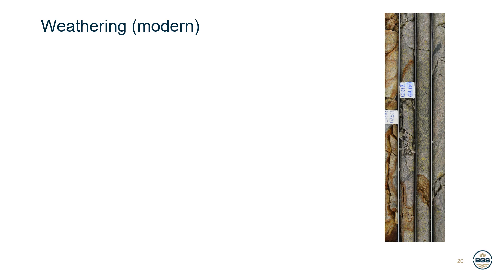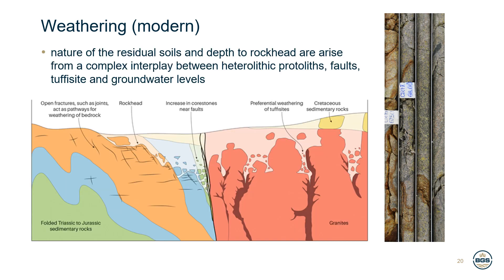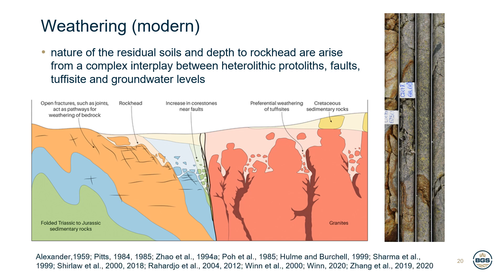The landmass of Singapore has been in a tropical latitude since the Jurassic, resulting in a prolonged history of tropical weathering that includes both recent weathering and extensive paleo-weathering, substantially altering intact and rock-mass properties. In Singapore, the nature of weathered rocks and depth-to-rockhead are possibly the most important aspects of geology for most civil engineering operations. Unfortunately they are also particularly difficult to predict, arising from a complex interplay between heterolithic protoliths, faults, tuffisite and groundwater levels. A significant volume of work has been published on bedrock weathering and residual soils, and I'll try to summarise some key points while urging further reading.